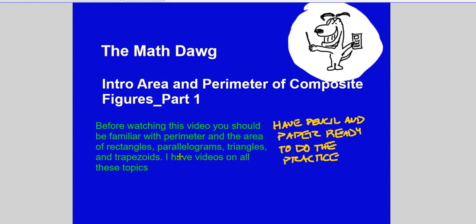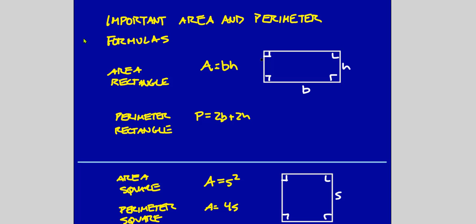I have done videos on all these topics and they're in the playlist on basic geometry. As always, have pencil and paper ready to do the practice that follows from the examples I do in this video. Let's get started. Some important area and perimeter formulas — first, the rectangle. This is the base, this is the height.